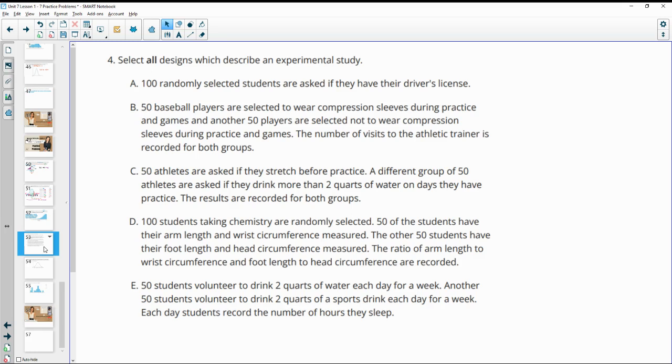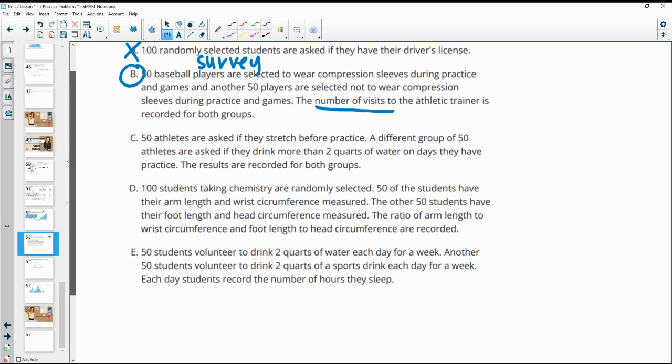Number 4: Select all designs which describe an experimental study. So A, 100 randomly selected students are asked if they have a driver's license. So all they're doing is asking something. So this is a survey. B, 50 baseball players are selected to wear compression sleeves during games and another 50 are selected to not wear compression sleeves. Then the number of visits to the athletic trainer is recorded for both. So they're looking at the impact of compression sleeves and non-compression sleeves on visits to the athletic trainer. So this is experimental. So they're experimenting to see if it changes something.